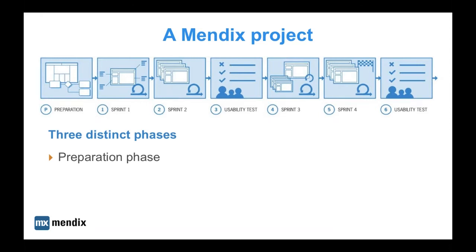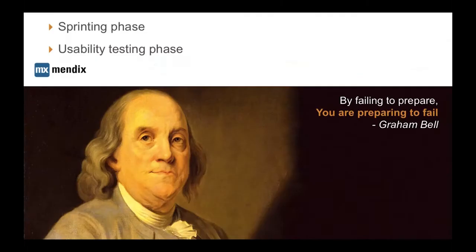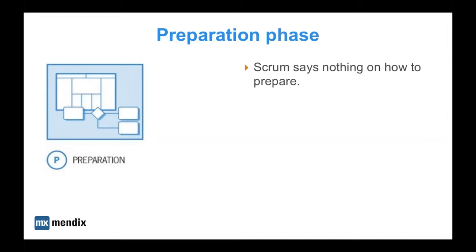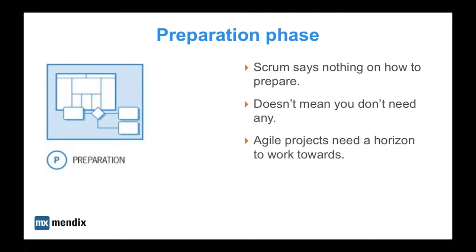Let's start with the preparation phase. As Graham Bell used to say, 'By failing to prepare, we are preparing to fail.' An interesting fact is that scrum doesn't actually say anything about how to prepare for a project — that doesn't mean we don't need any preparation. Like any other project, agile projects need a horizon to work towards, a sort of vision that serves as the foundation. Importantly, don't overdo it — don't paste a waterfall preparation onto an agile development process.